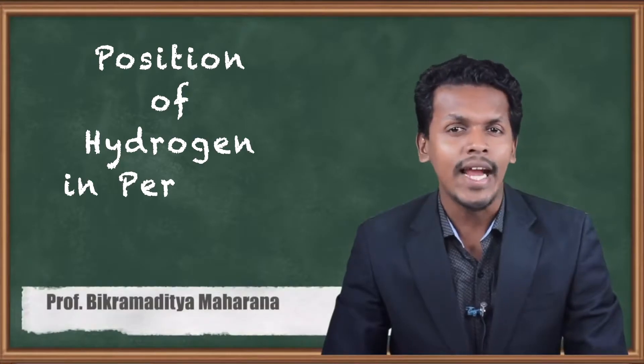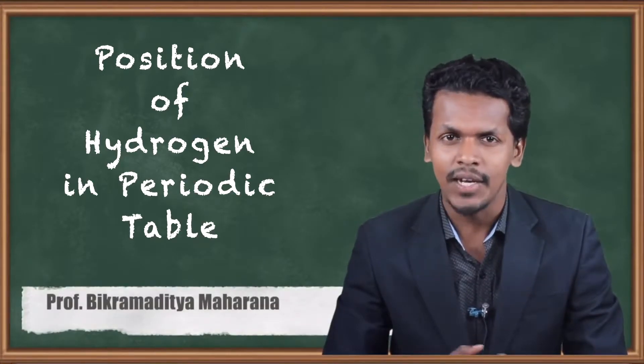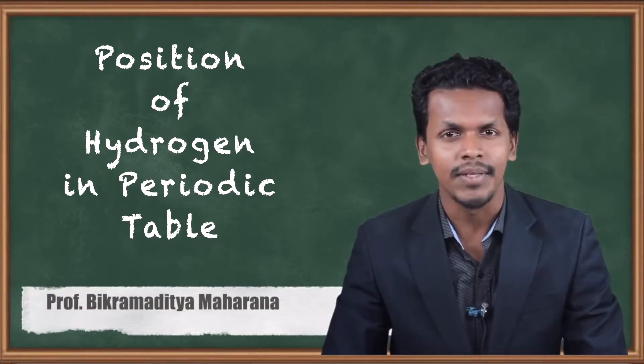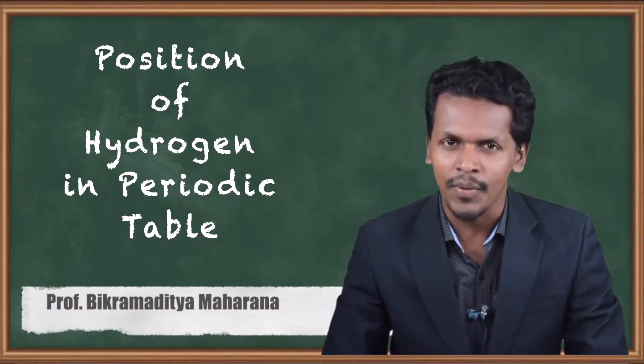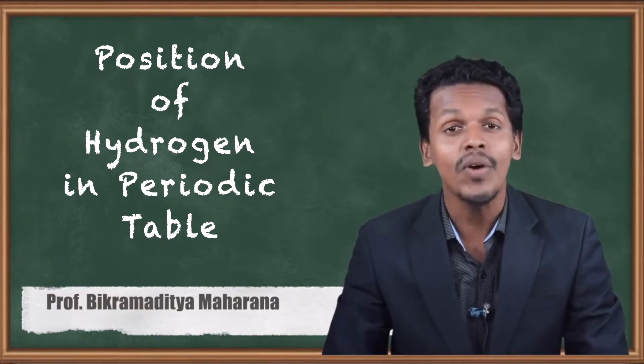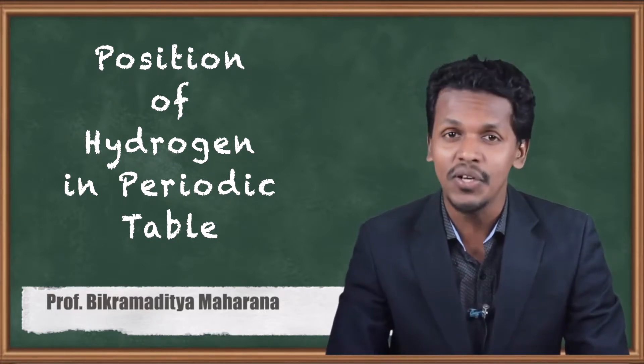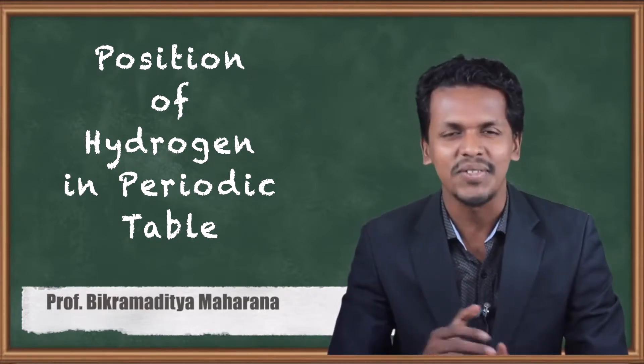Hello friends. We know that hydrogen is the first element of the periodic table, and that is the reason it has an atomic number of 1. But what is actually the position of hydrogen in the periodic table? Let us talk about that.